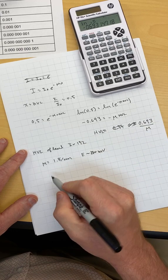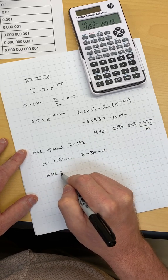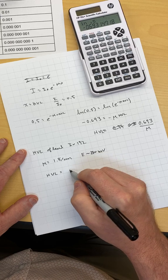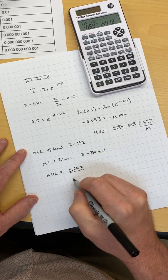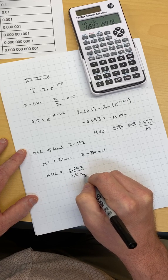So if I just plug it into this formula, I know that the half value layer of this is 0.693 divided by 1.8 per centimeter.